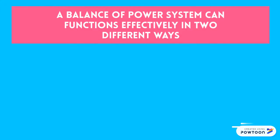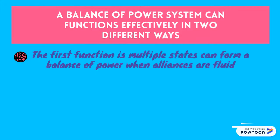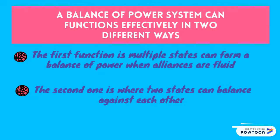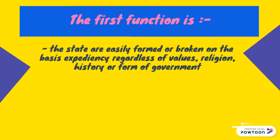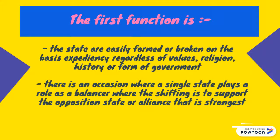A balance of power system can function effectively in two different ways. The first function is where multiple states can form a balance of power when alliances are fluid — easily formed or broken on the basis of expediency regardless of values, religion, history, or form of government. On occasion, a single state plays the role of a balancer by shifting support to whichever opposing state or alliance is the strongest.